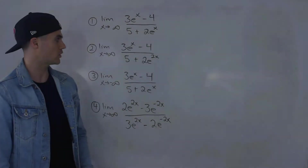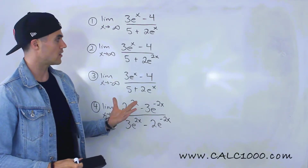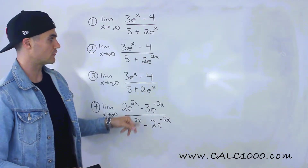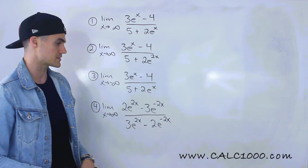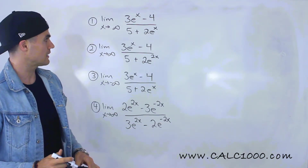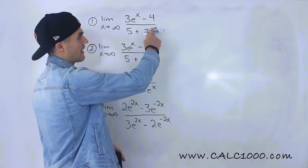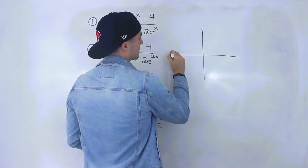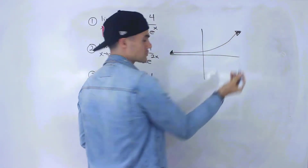Welcome back everyone. In this video we're going to do more limits at infinity, and notice that these have a bunch of exponential functions within them. We've got e to the power of x, e to the power of 2x, and some e to the negative exponents like negative 2x. So how do we deal with limits at infinity with exponential functions?